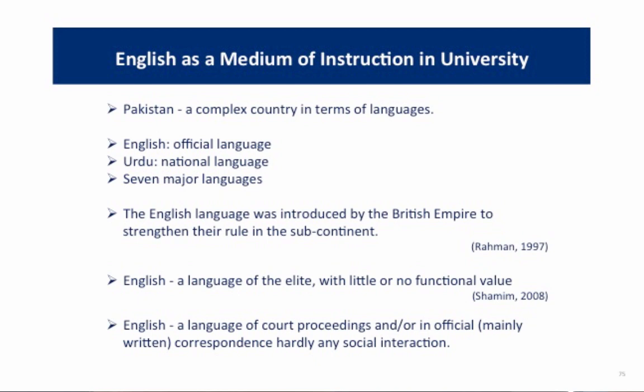From a language perspective, Pakistan is a complex country. English is an official language and has been since Pakistan came into existence in 1947. Prior to that, we were a British colony, and English was mainly introduced to strengthen the British Empire in our country. Urdu is our national language, and we have four different provinces, each with its own language, giving us seven major languages spoken overall. English is the language of the elite — it has social status but no functional value. Common people around the country would possibly not be able to understand it, except a few widely known words.